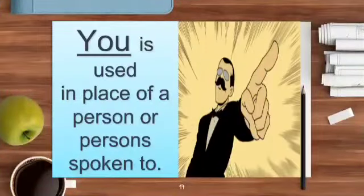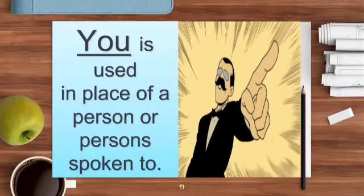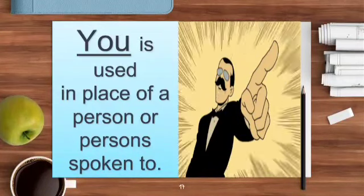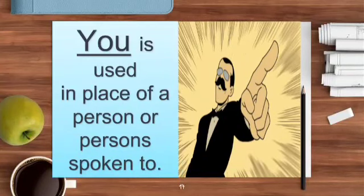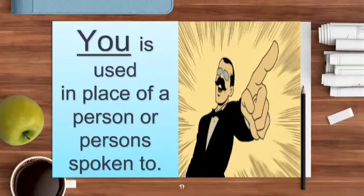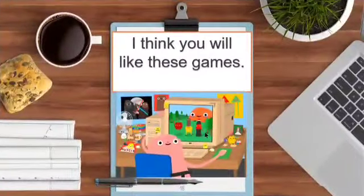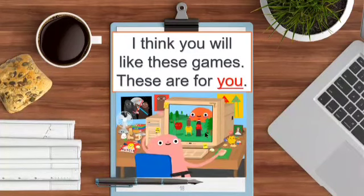Children, now here is the pronoun you. You is used in place of a person or persons spoken to. As I have already told you, the pronoun you is used in place of a singular noun and a plural noun. So when you are talking to a person or persons, you will always use you. For example: I think you will like these games. Here someone is talking to someone and used the word you. So these are for you.